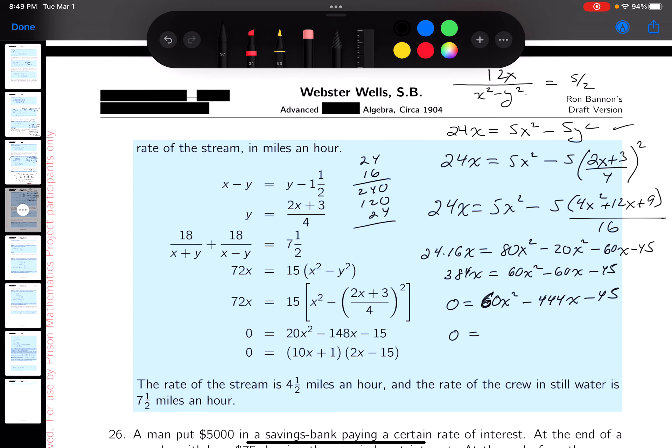20X squared minus 148X minus 15. You may wonder why I know it's divisible by 3: the sum of the digits is 12, that's divisible by 3.